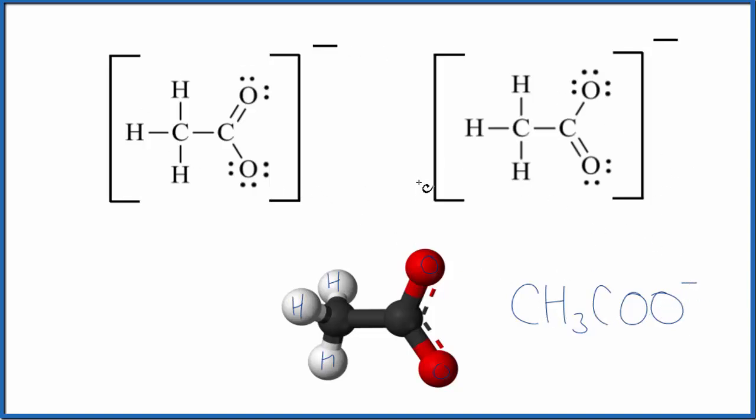Both of these are correct Lewis structures. We've used all the valence electrons, and the hydrogens, they have two valence electrons, so they're good. Carbon and oxygen, they have octets. So these are both correct.